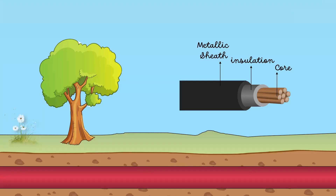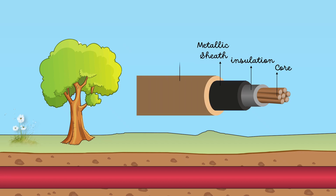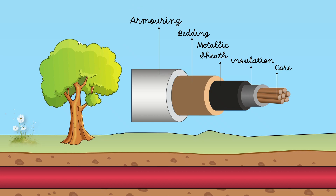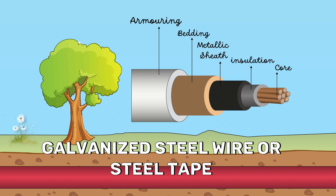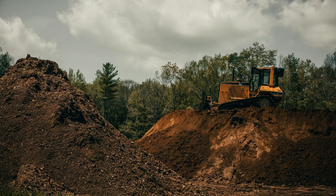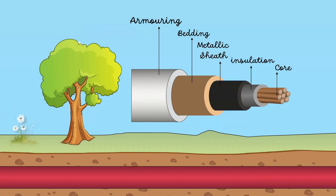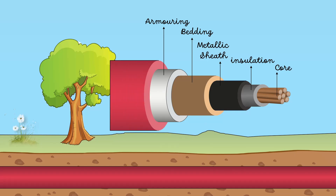To protect the metallic sheath from corrosion, a layer of bedding is applied. It consists of fibrous materials like jute. Over the bedding, armoring is provided, which consists of one or two layers of galvanized steel or steel tape. Its purpose is to protect the cable from mechanical injury during its installation and operational life. Armoring may not be done in case of some cables. In order to protect the armoring from atmospheric conditions, a layer of fibrous material similar to bedding is provided over the armoring. This is known as serving.